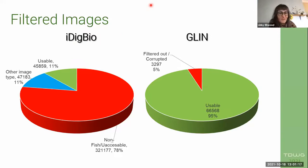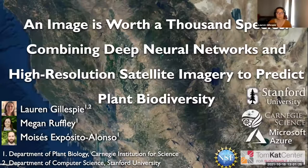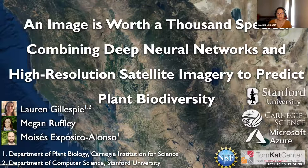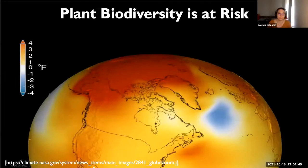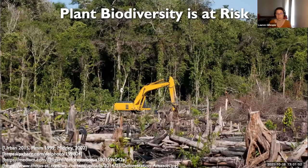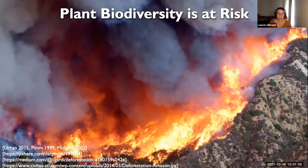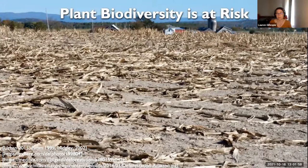Next speaker is Lauren Gillespie. My name is Lauren Gillespie and I'm a third-year computer science PhD student at Stanford University in Carnegie science. Today I'll be talking about how we can improve plant biodiversity prediction using deep neural networks. Worldwide plant and other species biodiversity is at extreme risk — from a warming planet to deforestation and other human-based land use changes, to more intense fire patterns like in California, and more severe weather events globally.